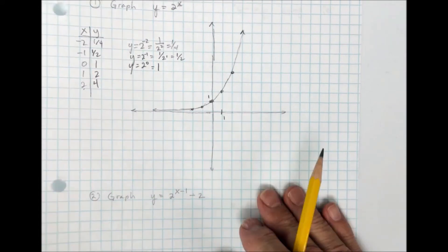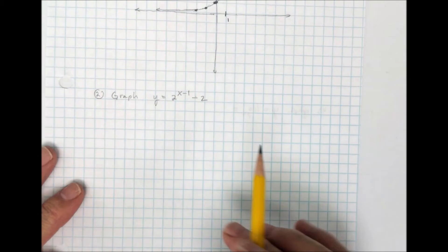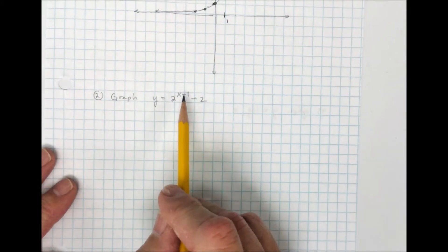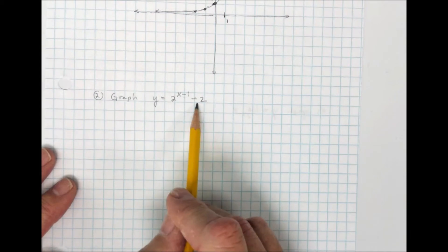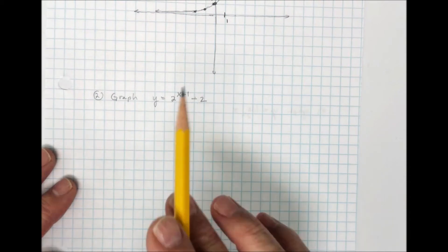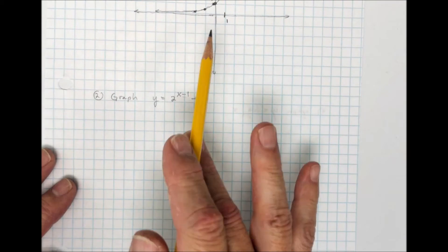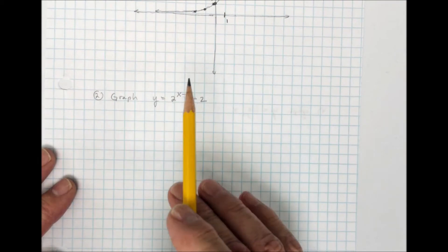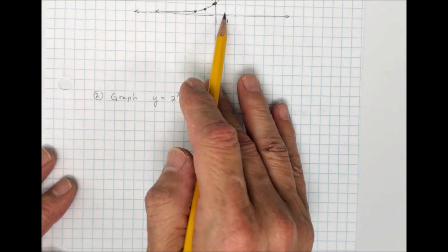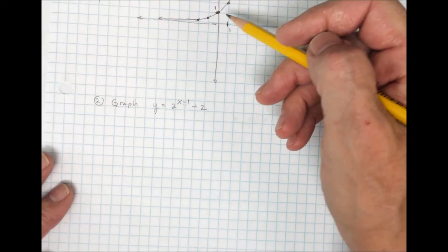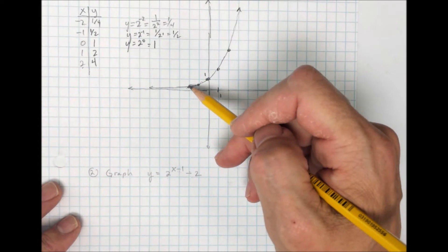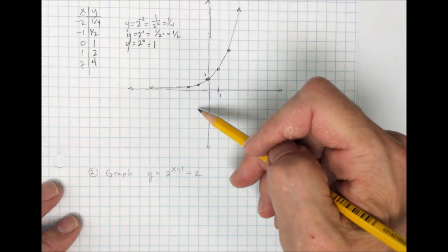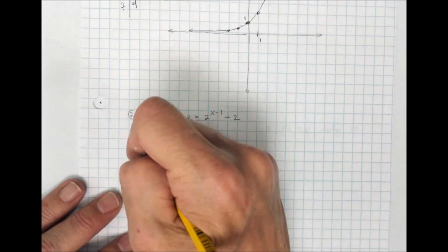Now I've changed it. There's a 1 subtracted from the x, which means a shift 1 to the right, and a minus 2 on the end, which means 2 down. So it's the same graph shape — base 2 — but shifted 1 to the right and 2 down. You could take all five points and shift each one 1 right and 2 down, or make a new t-chart.